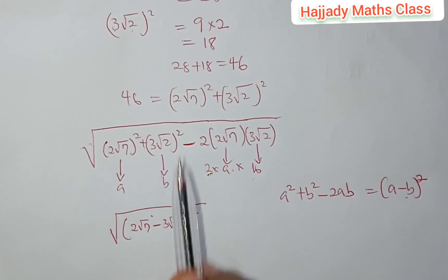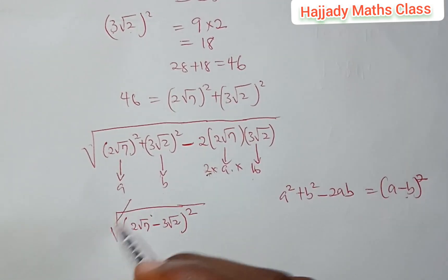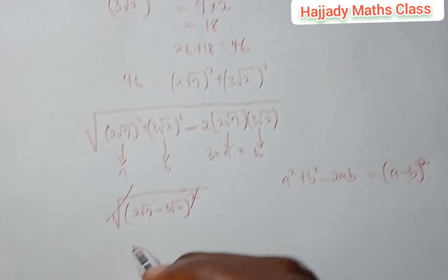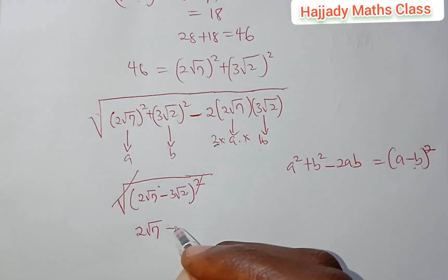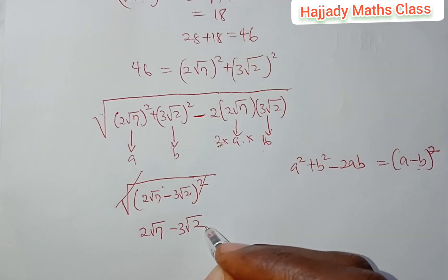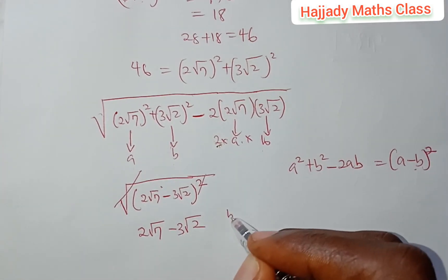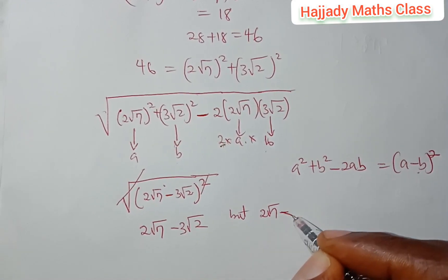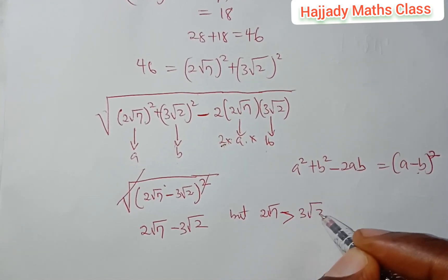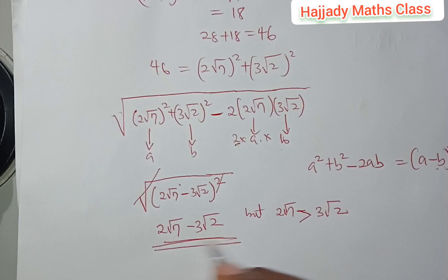If this has been squared, we get this back. So the root cancelling out, finally, we have 2√7 - 3√2. And don't forget that our 2√7 will surely be greater than 3√2. So this is our final answer.